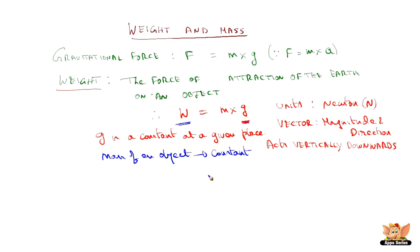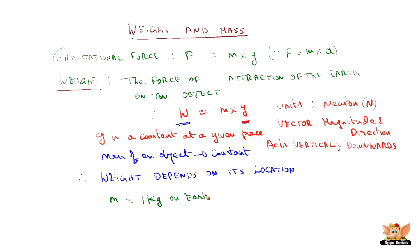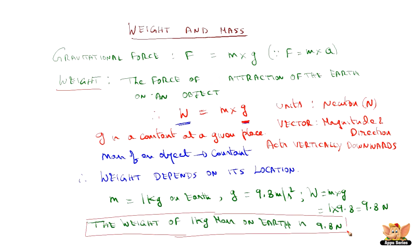What changes is the weight of the object. Why does it change? Because acceleration due to gravity changes. Hence we conclude that weight depends on its location, while g depends on its location. For example, if mass is 1 kg on Earth and g on Earth's surface is 9.8 m/s², then weight = m × g = 1 × 9.8 = 9.8 Newtons.